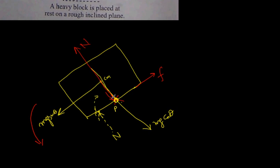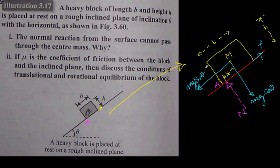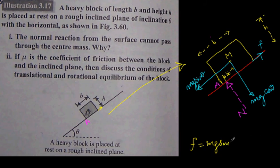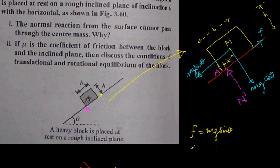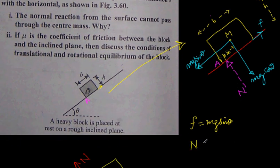If the body is small, we can assume N passes through the center of mass. Now coming to the main free body diagram: we have MG cos theta, MG sin theta, and N (shifted). The forces acting along the inclined surface are friction F and MG sin theta, so F equals MG sin theta. The forces perpendicular to the surface are N and MG cos theta, so N equals MG cos theta.